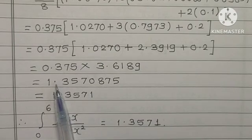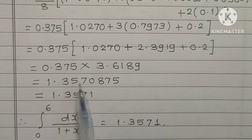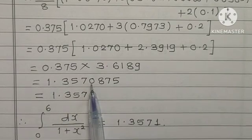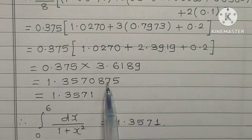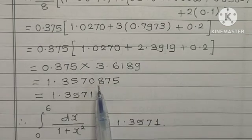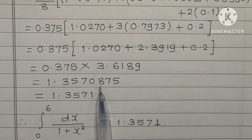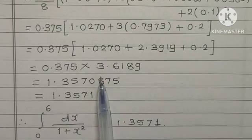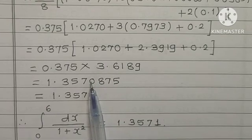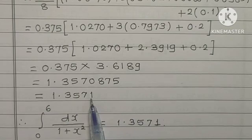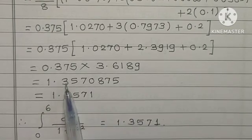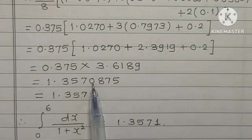After that this addition, I have multiplied 0.375. Then we are taking 4 decimal places: 1, 2, 3, and 4. After that, I have to drop this. When I drop this, this 8 is more than 5. Therefore, I will add 1 to the last value. That means 1.3571.